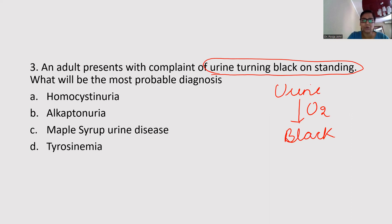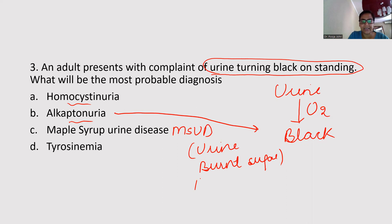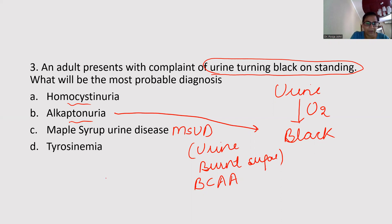Looking at the options: homocystinuria — in this there is no change in urine color. Alkaptonuria — yes, in alkaptonuria the urine turns black on standing. MSUD (maple syrup urine disease) — the urine gives the smell of burnt sugar, and it is related to branched-chain amino acids. Tyrosinemia can be type 1, 2, or 3, but in all three there is no change in urine color. So the answer is B — alkaptonuria.